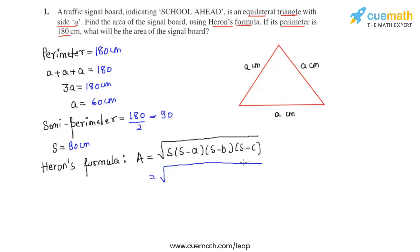As we know the values of all of them let's plug them in. So we write 90 times 90 minus 60 times 90 minus 60 times 90 minus 60. So on further calculation we get it as under root 90 times 30 times 30 times 30.